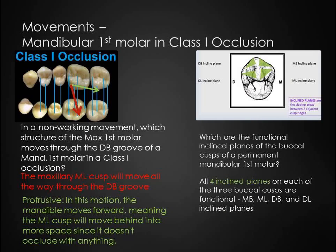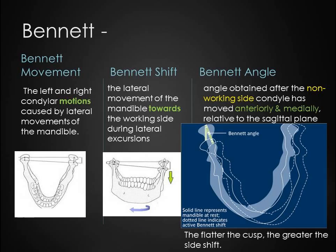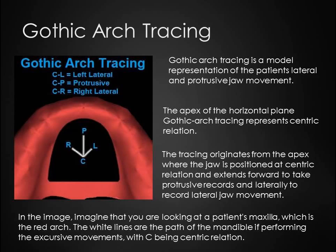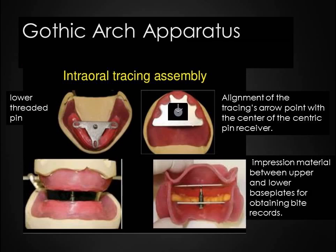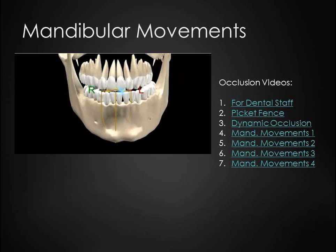The specific movements for a mandibular first molar in Class I occlusion is information that you may need to memorize for the boards. Also for the boards, be sure to distinguish between these three terms: movement refers to the left and right condylar motions; shift is the movement of the mandible towards the working side; and angle is the measurement taken after the non-working side has moved anteriorly and medially. Gothic arch tracings are useful in full denture cases. The tracing shows the position of the mandible in CR as well as protrusive and lateral excursions. Links for mandibular movement videos and other learning aids have been posted on Blackboard.